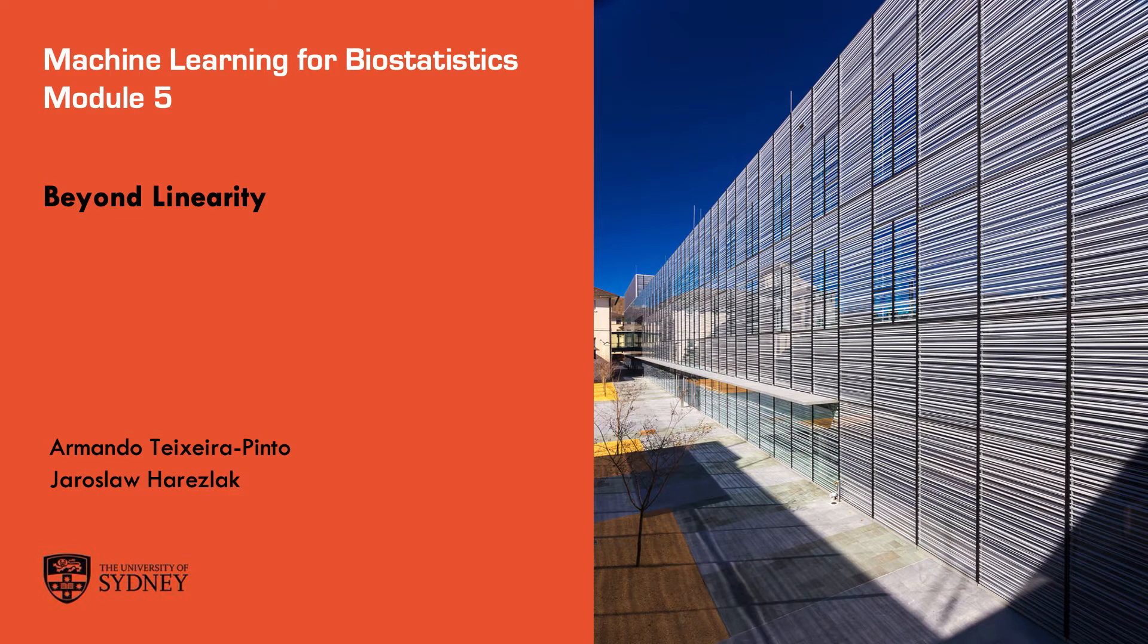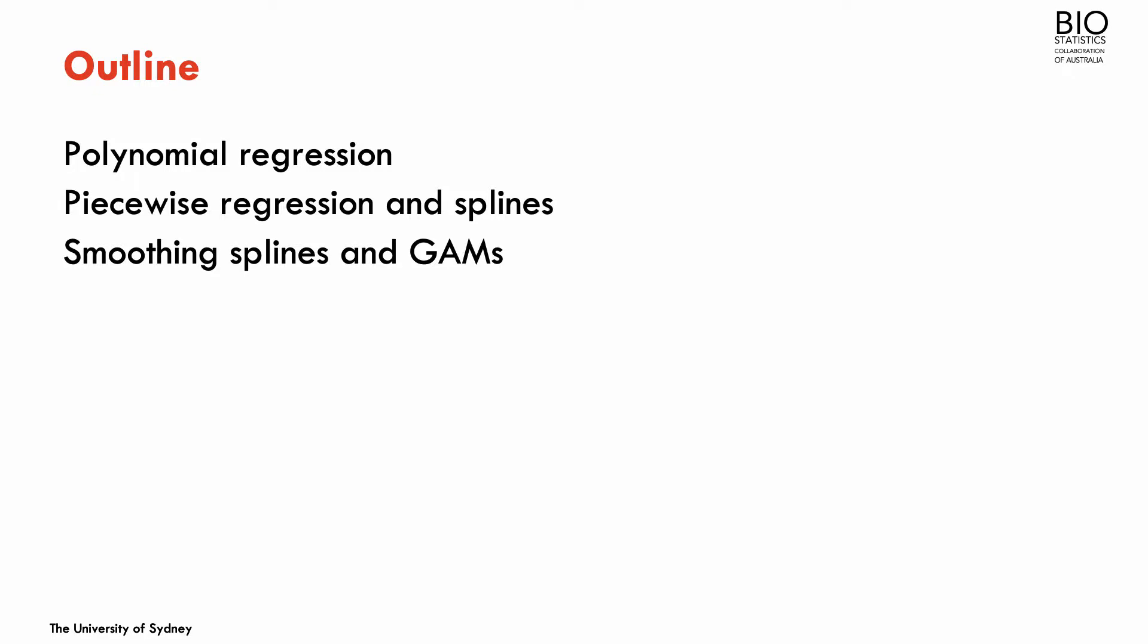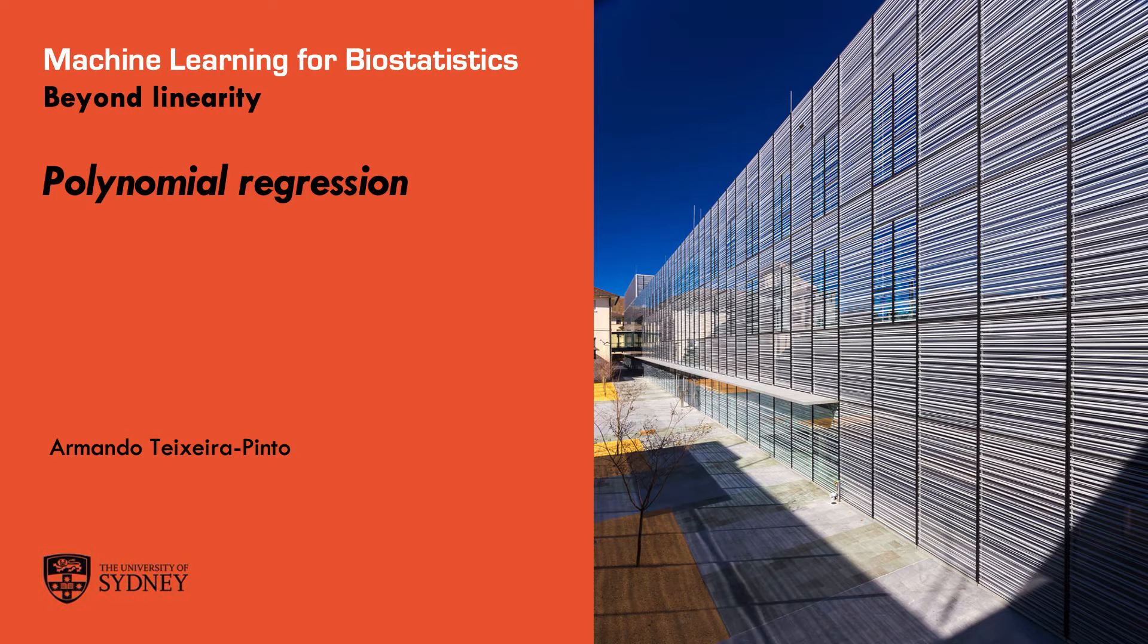In Module 5, we're going to explore methods and models that relax the assumption of linearity between the predictor and the outcome. I'm going to start in this section to talk about polynomial regression. This you might have covered in previous regression courses.